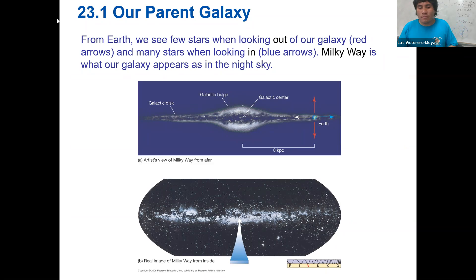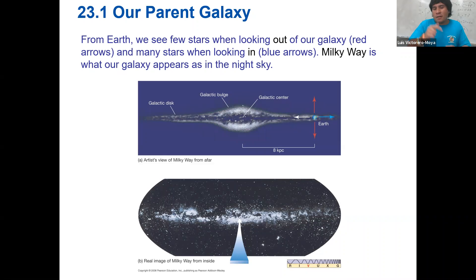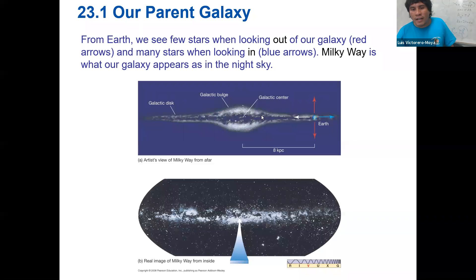We have an illustration and a real image view of the Milky Way. The main parts are the galactic disk, the galactic bulge, the halo — which would be a spherical halo around everything — and then the galactic center.